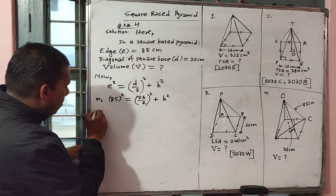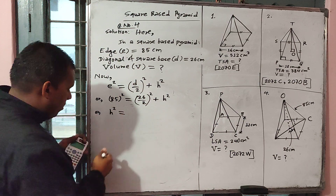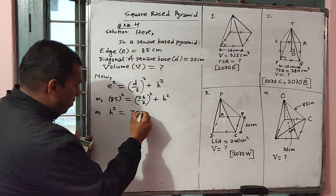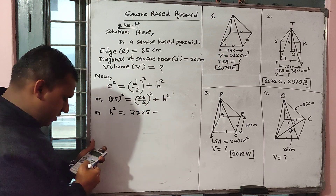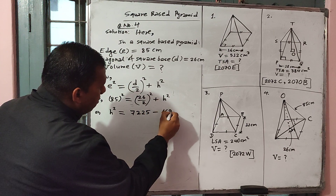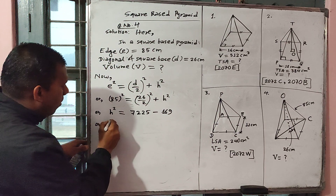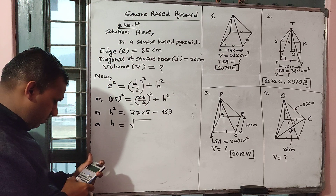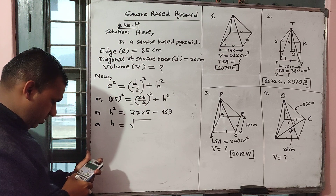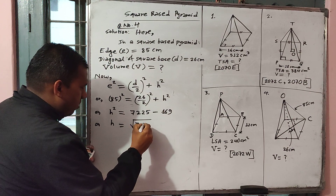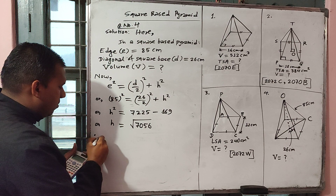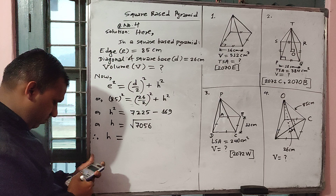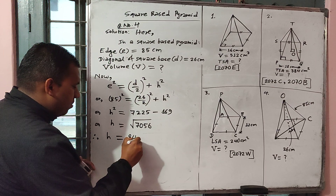H squared equals 7225 minus 169, which gives H squared equals 7056. Therefore vertical height H equals square root of 7056, which is 84. So vertical height is 84.